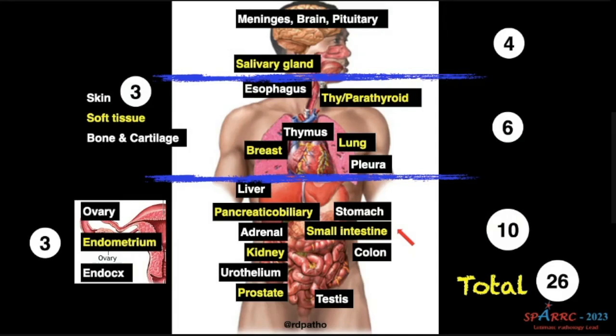Now we are going to organ-specific markers and I think there's a picture you can take a picture of this. There are 26 organs that have specific markers now and let us go through one by one.